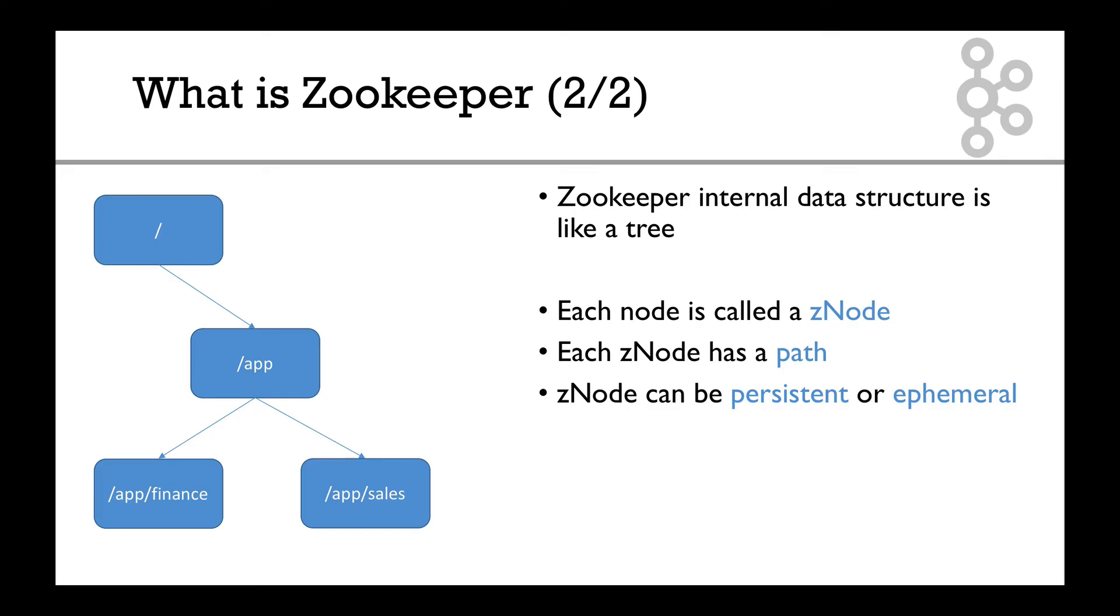An ephemeral Z node is a Z node that will just go away if your app disconnects. So each of them have advantages. Okay and Kafka uses both. Not for you to worry about but it's good to know that both exists.